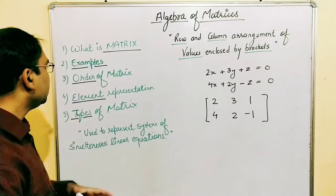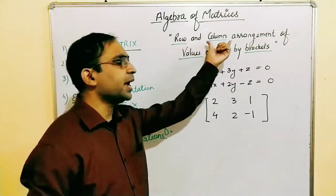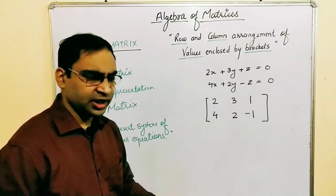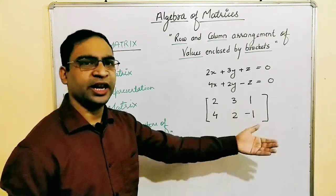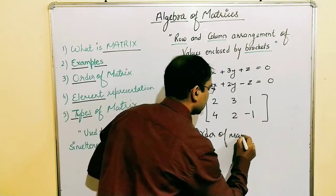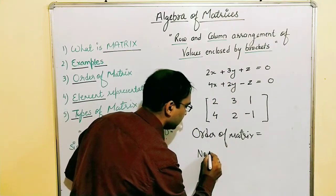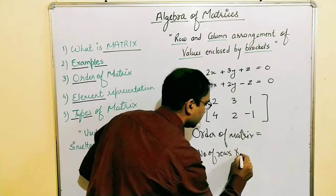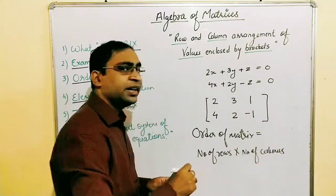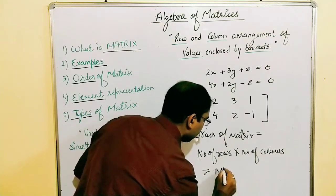Let's move further and talk about the order of the matrix. The order of the matrix is basically the rows and columns. When we say there are m rows and n columns, we say the order of the matrix is m × n. The order is represented by: number of rows × number of columns. So if any matrix has m rows and n columns, its order will be m × n.